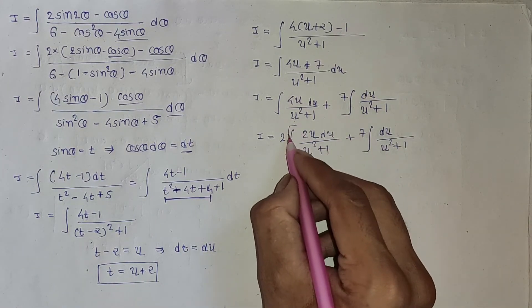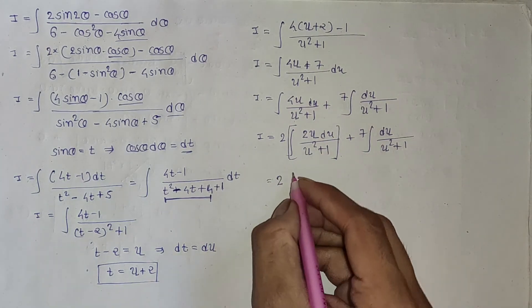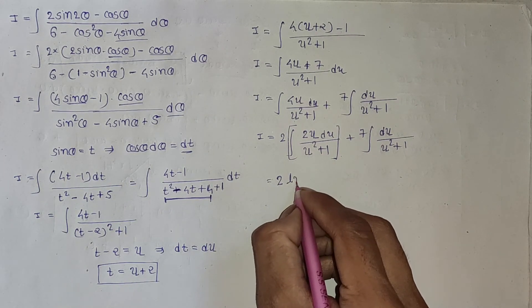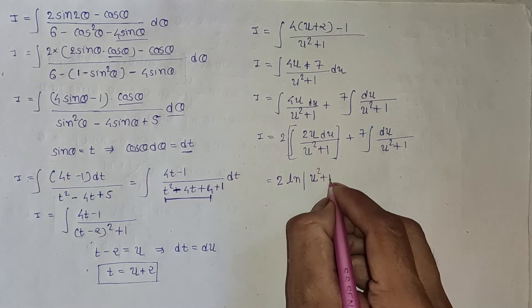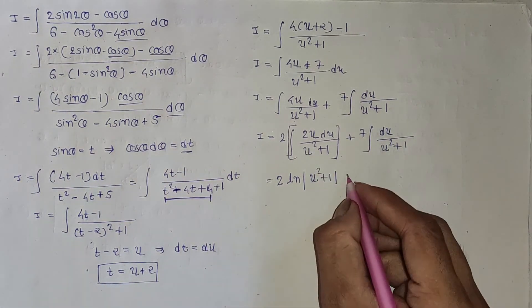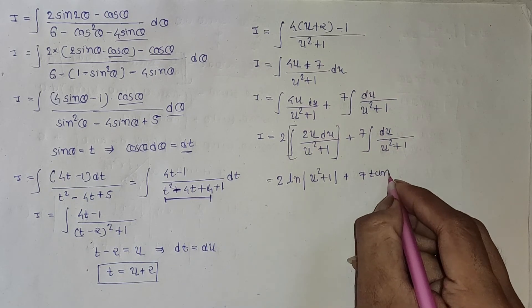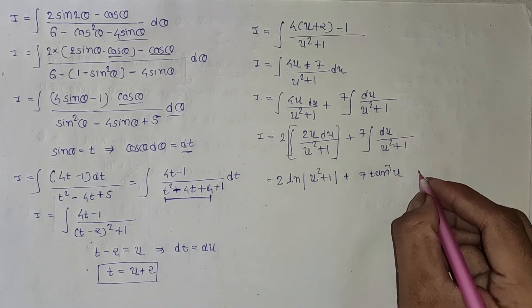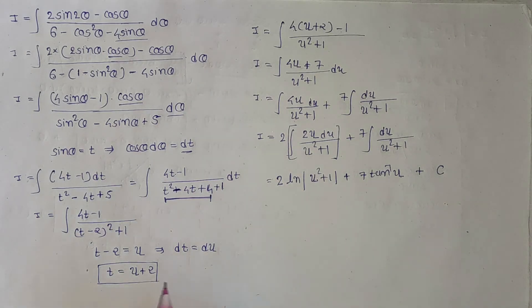The integration of these terms gives 2 ln of absolute value of u squared plus 1, plus 7 times arctan of u, plus integration constant c.